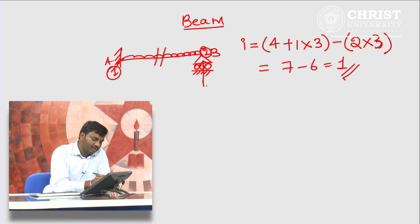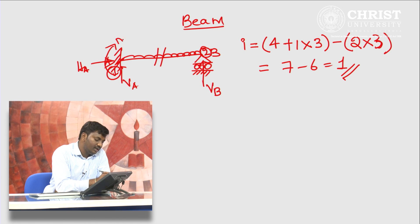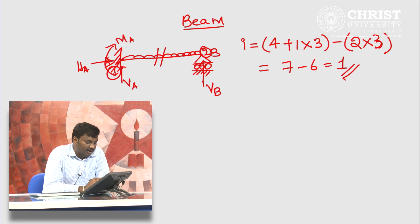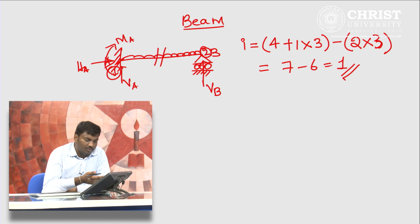The redundant can be treated as the vertical reaction at B, or V A. Here H A will be equal to 0, therefore you cannot treat H A as the redundant. Instead you can treat M A as the redundant. If you treat M A as redundant, this beam becomes a simply supported beam, and if you treat V B as the redundant, you can use either the force method or displacement method to find out this reaction V B or V A. We can treat anything as redundant apart from H A since there are no horizontal forces acting on the beam.